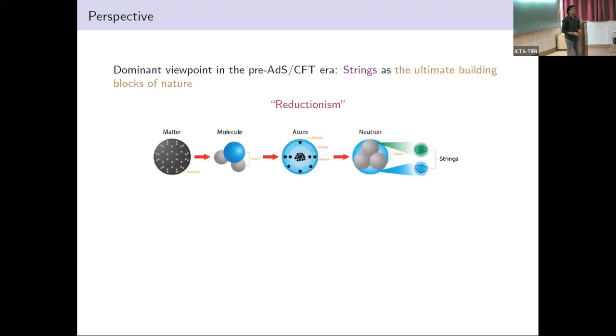One dominant perspective in the string community before the advent of AdS/CFT was that strings are ultimate building blocks of nature. For example, galaxies are made of matter, matter are made of molecules, molecules are made of atoms, atoms are made of electrons, protons, neutrons. They are made of quarks, and quarks are made of strings.